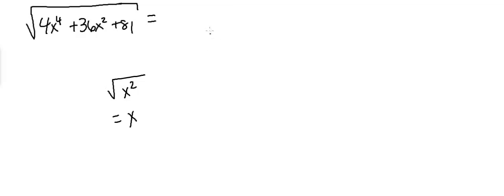So if I set u equal to x squared and rewrite this, I'm going to get the square root of 4u squared. And that is because this term is 4 times x squared squared. And since I let u equal x squared, this equals 4u squared.